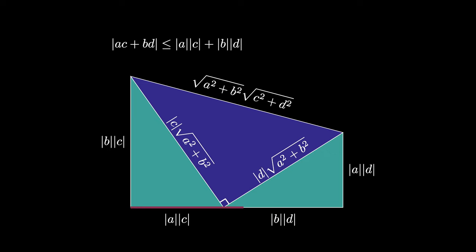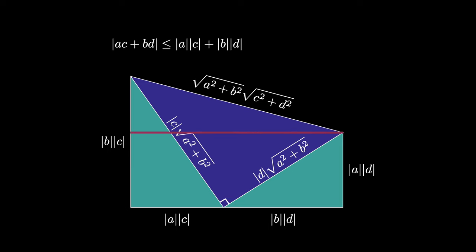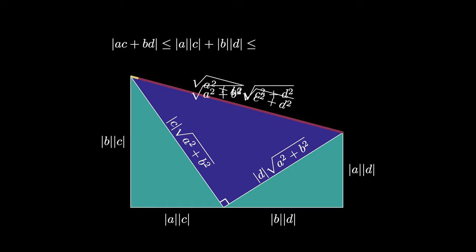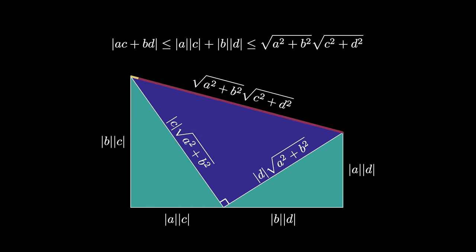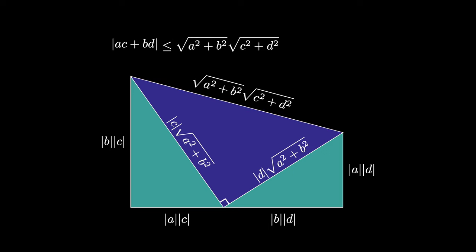On the other hand, from this trapezoidal shape, we see that the base length — which is the absolute value of A times C plus the absolute value of B times D — must be less than or equal to the length of the hypotenuse of that top triangle, which is the square root of A squared plus B squared times the square root of C squared plus D squared.